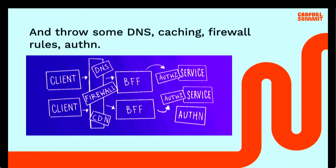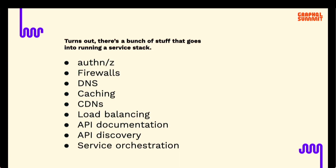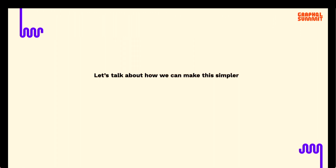Once you've got your BFF, you might realize you need a firewall, custom domain names, caching, CDN things. And ultimately there's a lot of stuff that goes into running a service stack — on top of that, load balancing, API docs, API discovery, service orchestration. So let's talk about wrangling that and making it a little simpler.